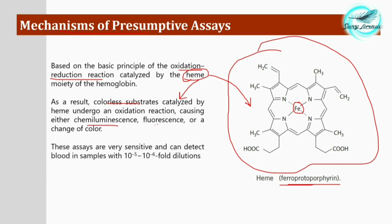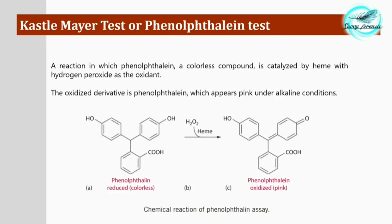Colorless substrates are catalyzed by heme and converted into colored products. Chemiluminescence and fluorescence assays are also colorimetric assays — chemiluminescence imparts light and fluorescence gives a blue-green color visible in the dark. These presumptive tests are very sensitive and can detect blood samples up to a 10⁻⁵ to 10⁻⁶ fold dilution. Now let's look at the Castle Meyer test.